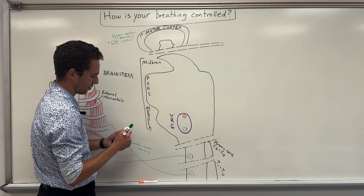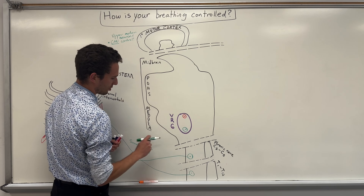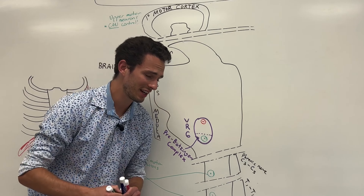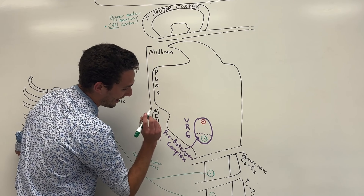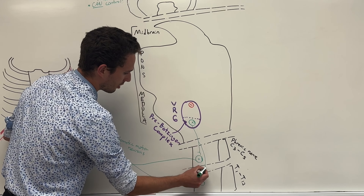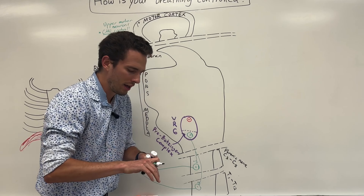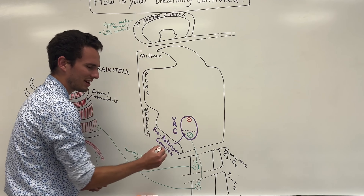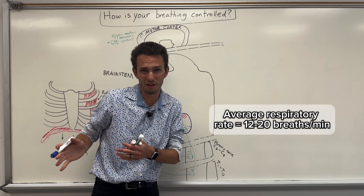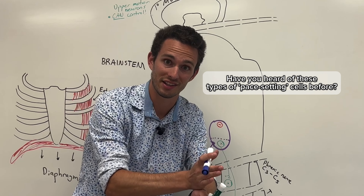In the ventral respiratory group, I want you to focus on the inferior part — there's a region inside called the pre-Bötzinger complex. These guys contain those stimulatory neurons that will involuntarily — you don't control these — talk to those somatic motor neurons and trigger them to begin the process of inspiration. What's fascinating is that these involuntary neurons set a type of pace for your breathing. During quiet breathing, you're probably going to breathe anywhere from 12 to 20 breaths per minute. That's a rhythm — it almost seems like they have a pace set to them.